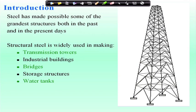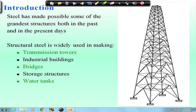Nowadays, skyscrapers are mostly built with steel or steel-concrete composite. Many buildings, bridges, and towers both abroad and in our country are made of steel. Structural steel is widely used in making transmission towers, industrial buildings, bridges — both railway over-bridges and general bridges — storage structures, steel water tanks, railway platforms, airports, and other structures. Skyscrapers today are mainly made using steel.